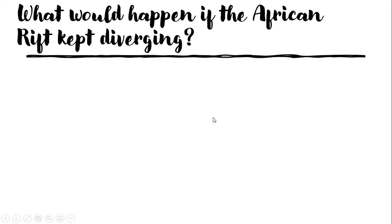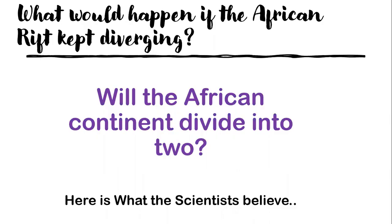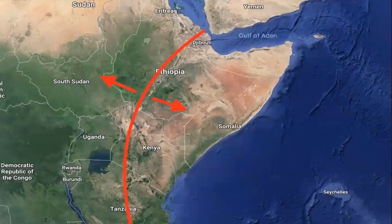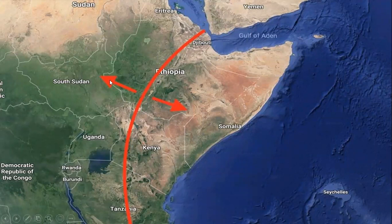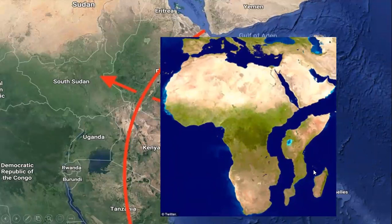What will happen if the African rift keeps diverging? If this area keeps diverging, a continent is being split. The scientists believe that this plate is moving to the right and this plate to the left. After some time, we are going to have another continent form — Africa will split into two continents, with formation of a new continent after some millions of years.